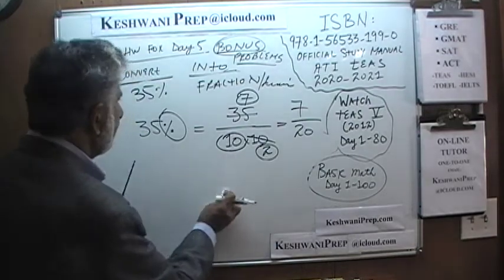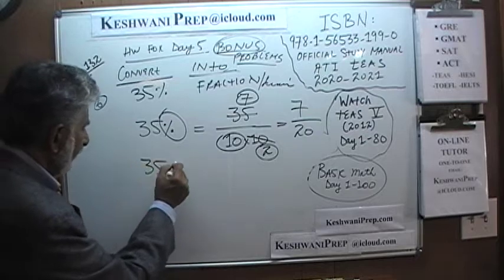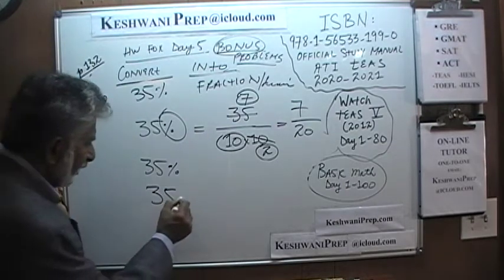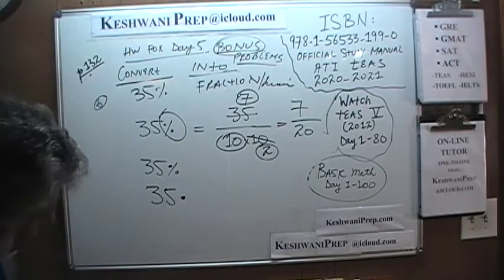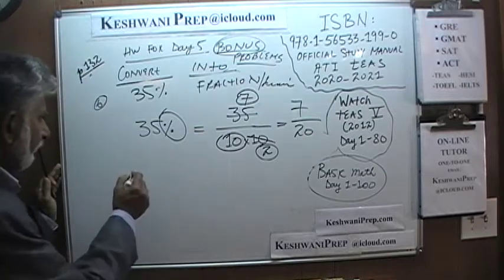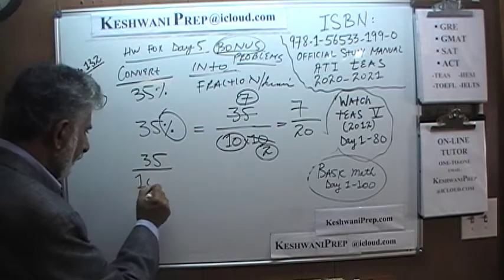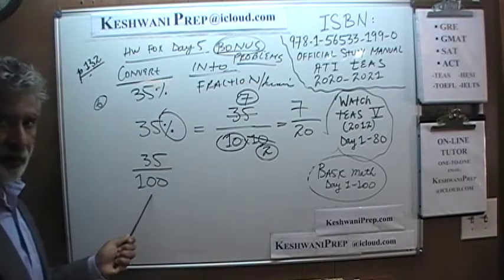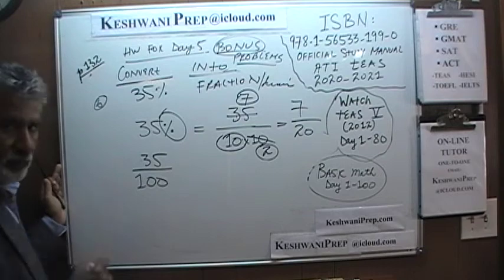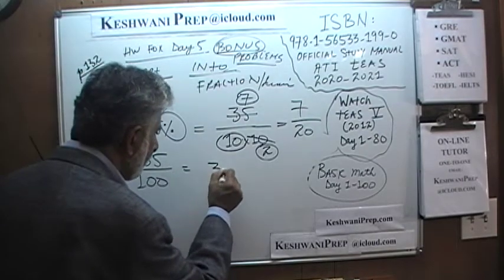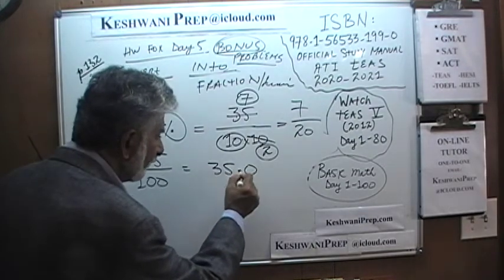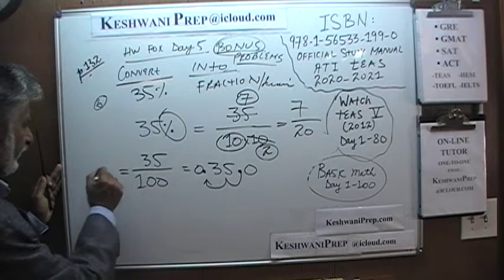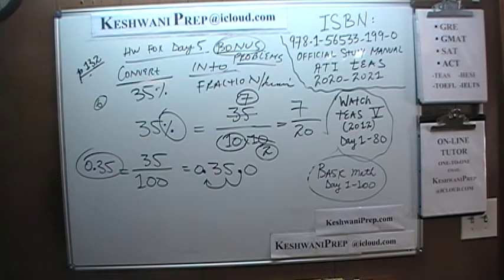Now we have to convert 35% to decimal. 35% is the same as 35 over 100. Instead of reducing it, we divide 35 by 100. We look at the decimal point and move it two spaces to the left. Therefore, 35 over 100 is simply 0.35. That was number 6.